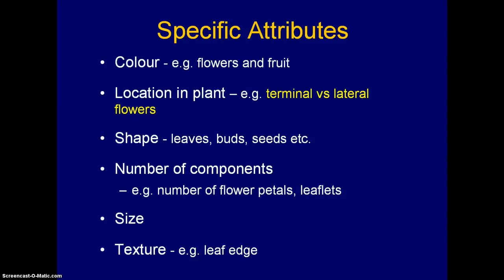Let's look at some of the specific attributes that can be used for identifying plants. Color is important, especially with flowers and fruit to some extent. With flowers, one has to recall that because of breeding — especially when it comes to cultivars — they can be modified quite a bit. But the native color of flowers of a natural plant can be useful.